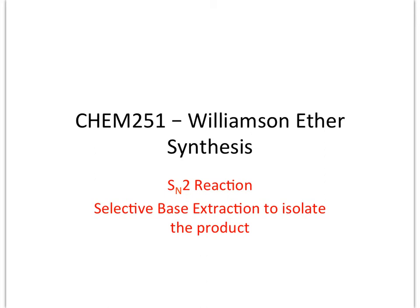This is our pre-lab lecture discussion over our laboratory for this week. In this case, it's the Williamson ether synthesis. The Williamson ether synthesis uses an SN2 reaction — specifically an SN2 reaction of an alkoxide with an alkyl halide — to make an ether.